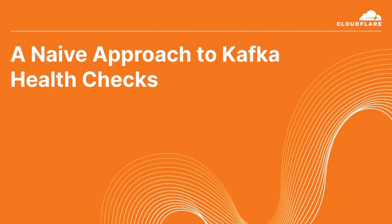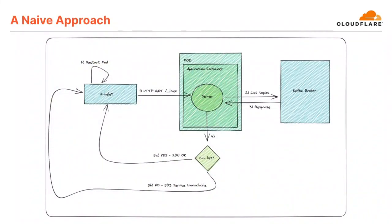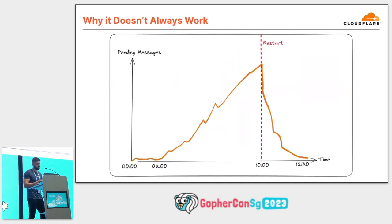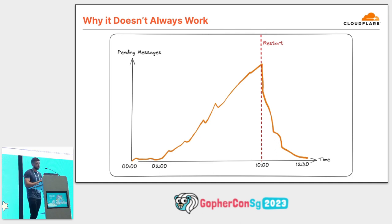At Cloudflare, we had a pretty naive approach to health checks in the past. We would check the underlying connection status between the application and the Kafka broker, usually by listing the topic on the broker. This did a good job at catching certain errors like TLS problems or degraded connections, and applications would restart accordingly. However, they didn't catch all the problems with Kafka consumers. Liveness checks should catch a deadlock where an application is still running but unable to make progress, and this wasn't always the case for us. Sometimes our consumers would sit idle and not process messages, leading to lag on the partition and incidents — including delays to time-sensitive emails.